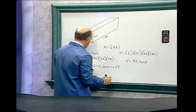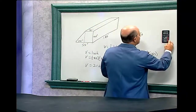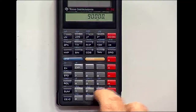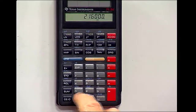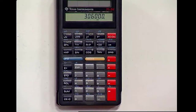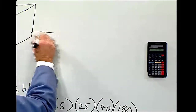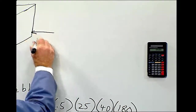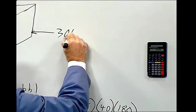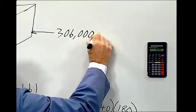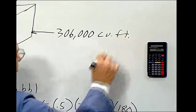Now we add them together: 90,000 plus 216,000. The total volume of this building is 306,000 cubic feet.